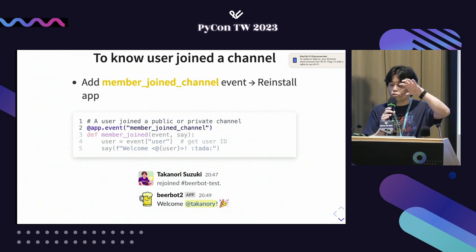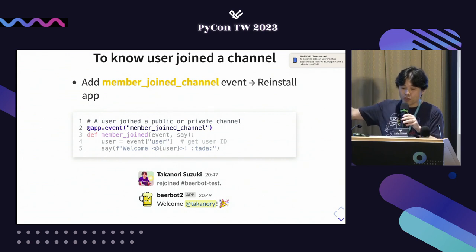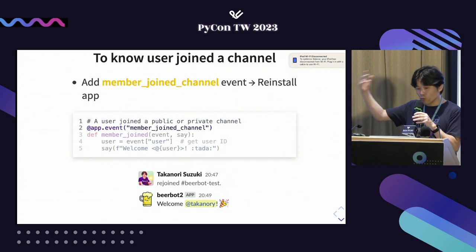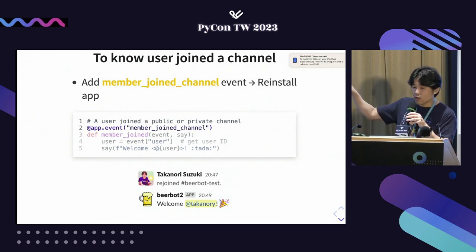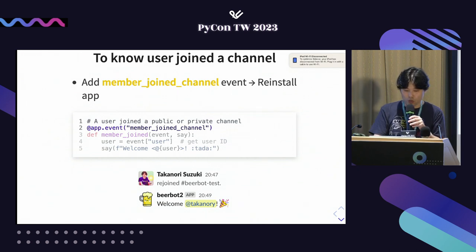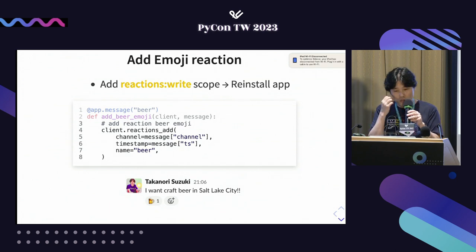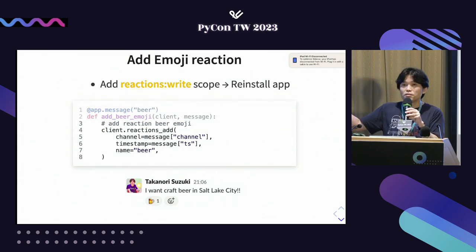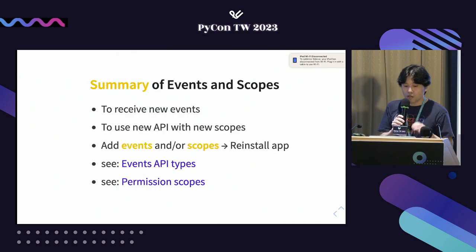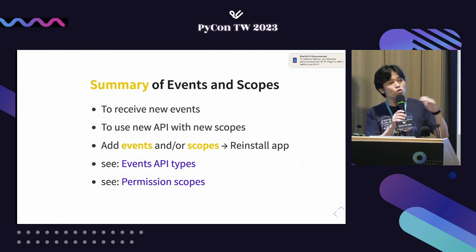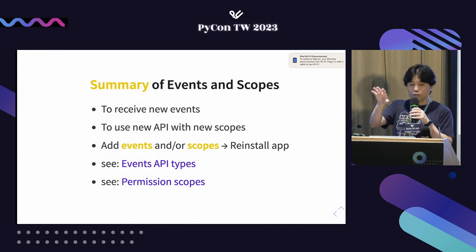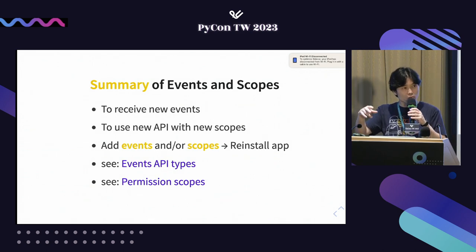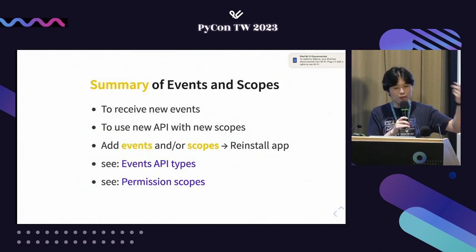If you want to know when a user joins a channel, add the member_joined_channel event to bot events and reinstall the application. Then you can handle the event with the app.event decorator and send a welcome message automatically. If you want to add emoji reactions to messages, add the reactions:write scope and use the reaction_add method.